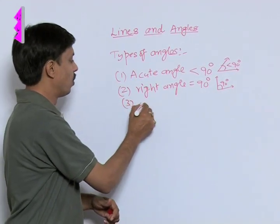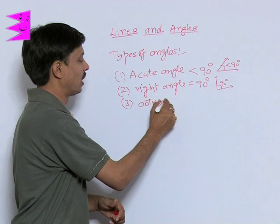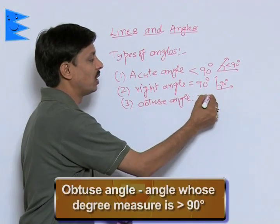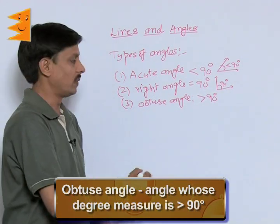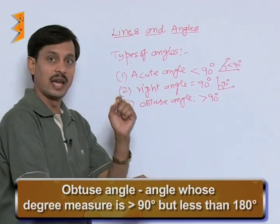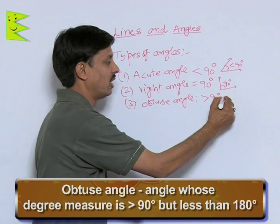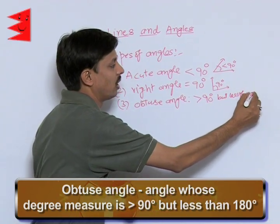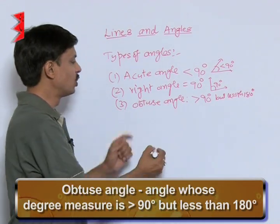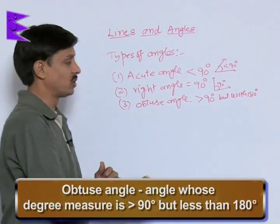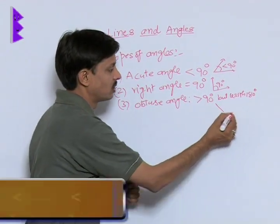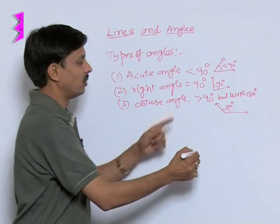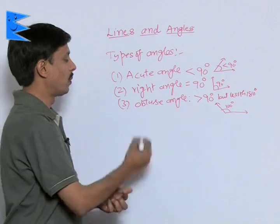Third is what is obtuse angle? An angle whose degree measure is greater than 90 degree but less than 180, greater than 90 degree is known as the obtuse angle. Suppose this is the angle 100 degree you can assume, then you will say this is the obtuse angle.